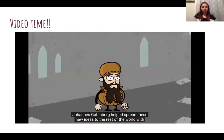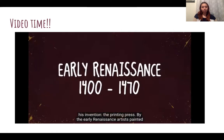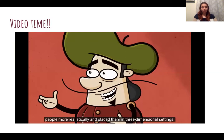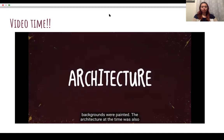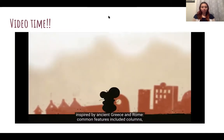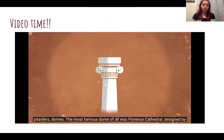Johannes Gutenberg helped spread these new ideas to the rest of the world with his invention, the printing press. By the early Renaissance, artists painted people more realistically and placed them in three-dimensional settings. The introduction of perspective revolutionized the way buildings and backgrounds were painted. The architecture of the time was also inspired by Ancient Greece and Rome. Common features included columns, pilasters, and domes.